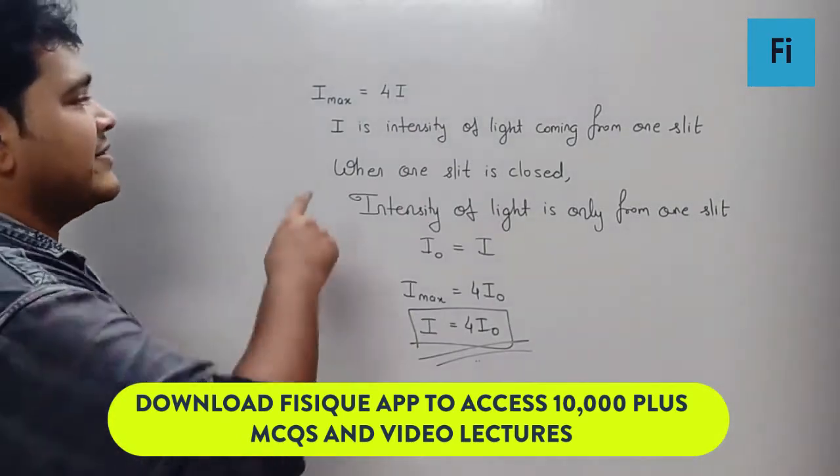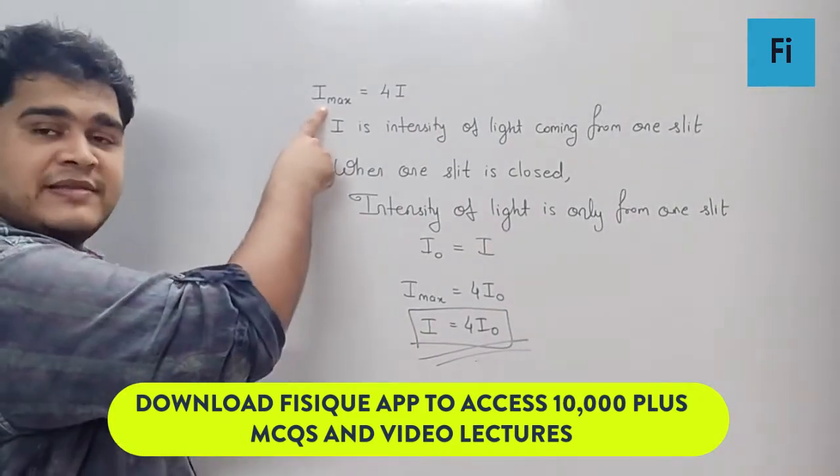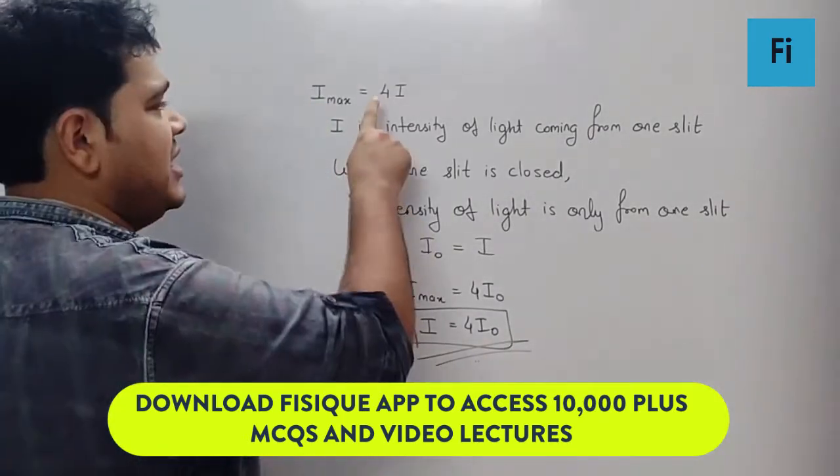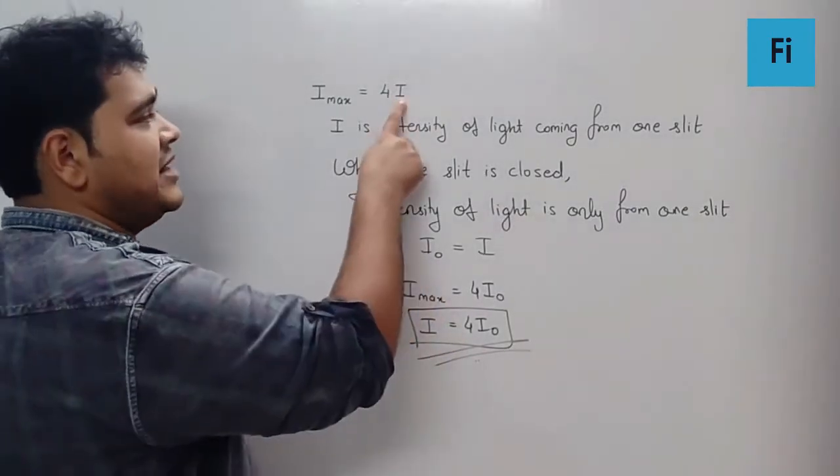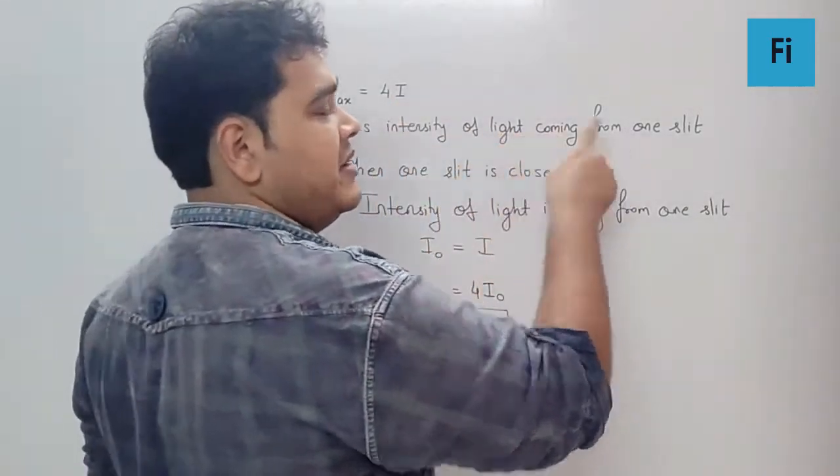I can say the I_max, the maximum intensity at a point, can be equal to 4I, which by formula we know about, where definitely I is the intensity of light coming from one slit.